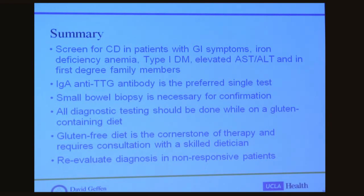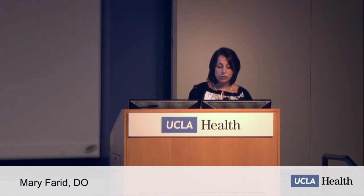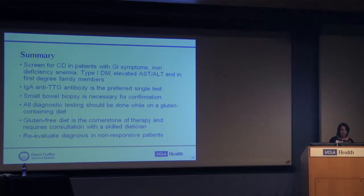The take-home points: screen for celiac disease in any patient with GI symptoms, iron deficiency anemia, type 1 diabetes, elevated transaminases, and in first-degree family members of celiac patients. IgA anti-tTG antibody is the preferred single test. Small bowel biopsy is absolutely necessary for confirmation, and don't forget that all diagnostic testing should be done while the patient is on a gluten-containing diet. A gluten-free diet is the cornerstone of therapy and requires consultation with a skilled dietitian. Always reevaluate the diagnosis in patients who are not responding.